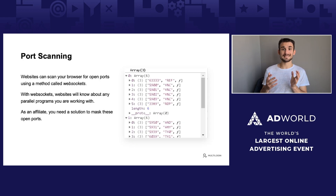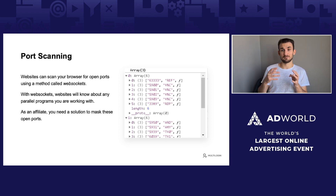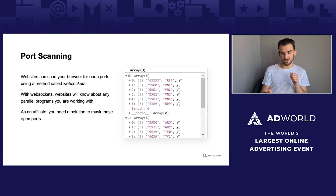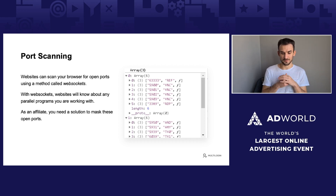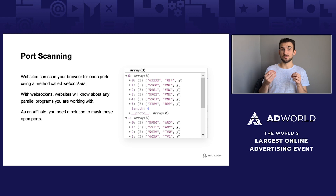Port scanning: websites can scan your browser for open ports using a method called WebSockets. With WebSockets, websites can know what parallel programs you're running. Specifically, Facebook uses this algorithm to understand if you're running TeamViewer, AnyDesk, or any other remote connection program. On this picture you can see the code responsible for checking these ports — port 6039 is the TeamViewer one. As an affiliate, you would need a solution to mask these open ports, or you would need to bind TeamViewer or any other remote connection program to a non-default port.